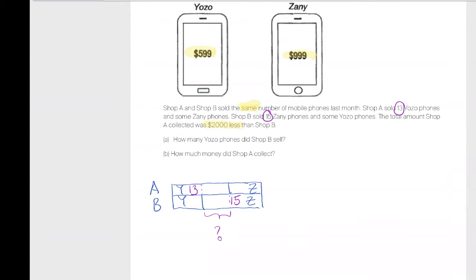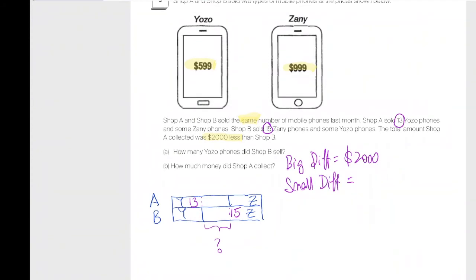The first thing you want to identify is that the big difference in this question is actually 2,000. What's the small difference here, Achimau? Because Zeny phones are more expensive than the Yozo phones, this is like the difference between them. Also, you take 999 minus 599.